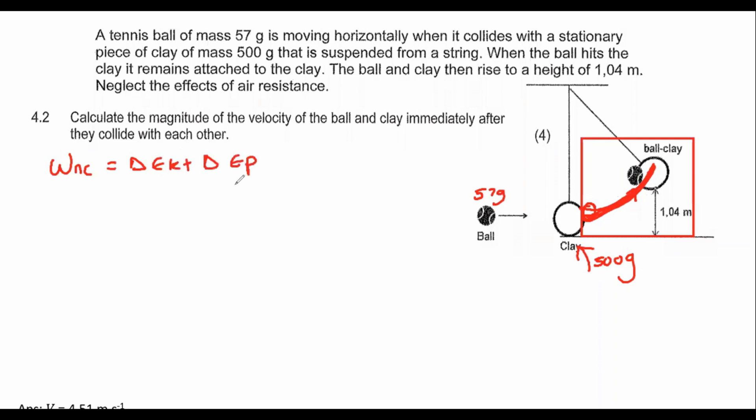When you use the WNC formula, we must remember that WNC is the work of friction, applied forces, or any forces like tension. But if you look at this, they said that there is no air resistance. They haven't spoken about friction. There's no applied forces. The tension in the rope doesn't count in this type of question; that's an external force.